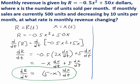We can use that relationship with the given information to figure out how fast revenue is changing when you're selling 500 units and the rate at which you're selling units is decreasing by 10 units per month.